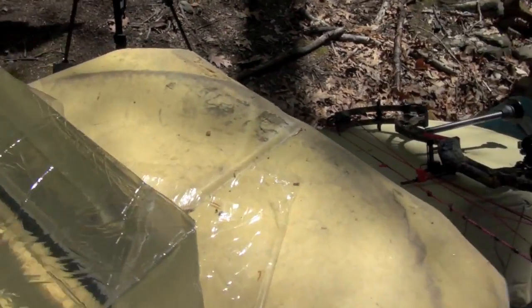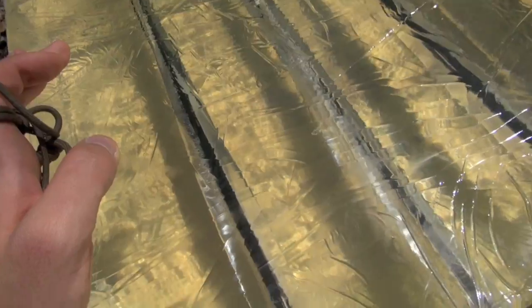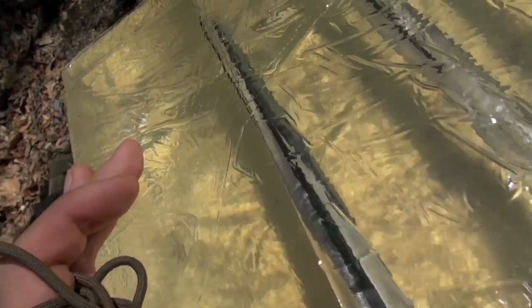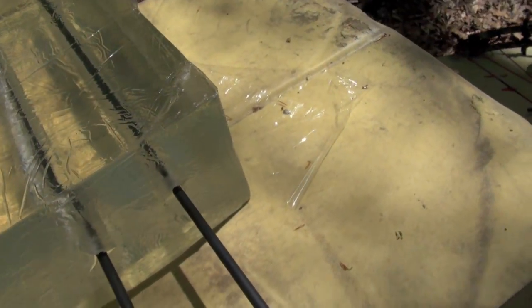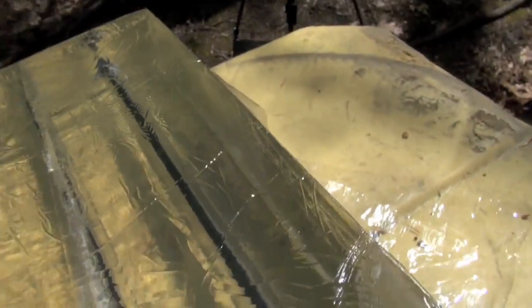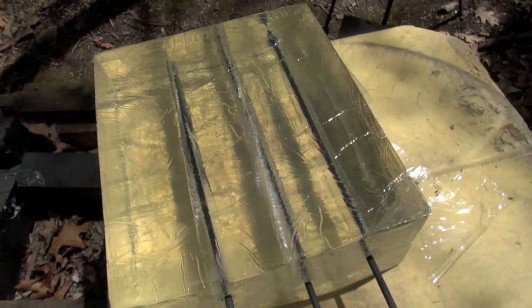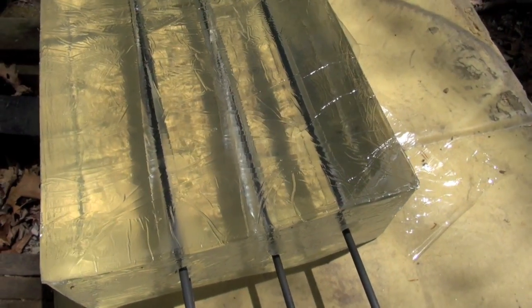But for wound channels, I'm most impressed with this crazy spiral wound channel of the Helix. It's pretty wide too, especially for its size. And the QAD Exodus made a great wound channel also. Here's the Landshark.